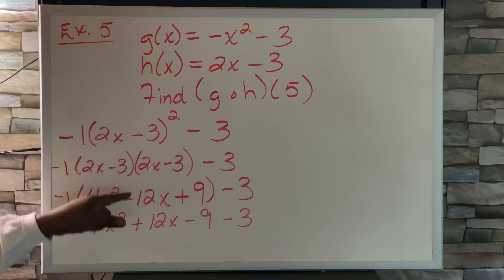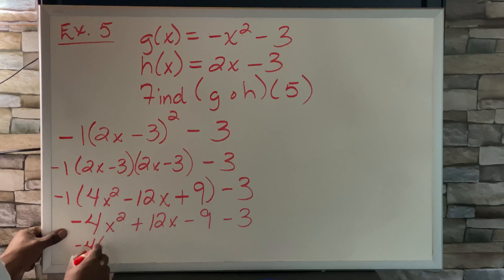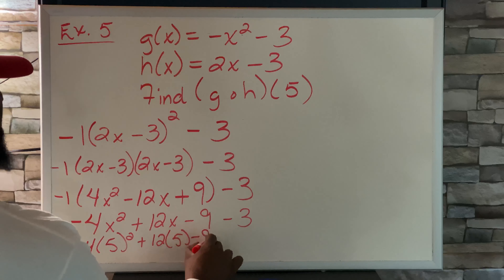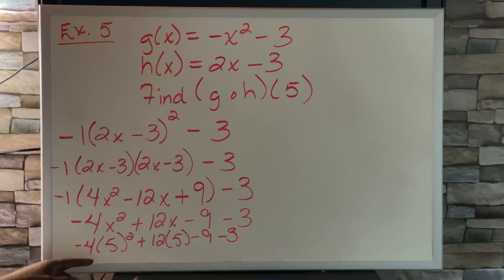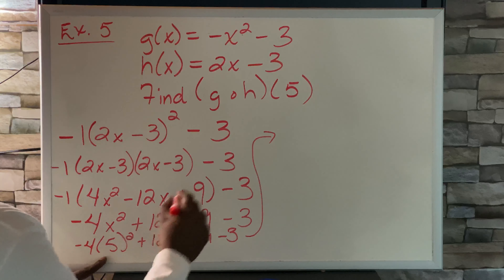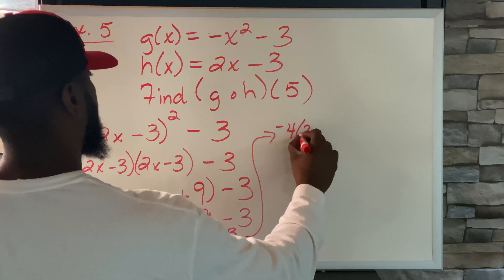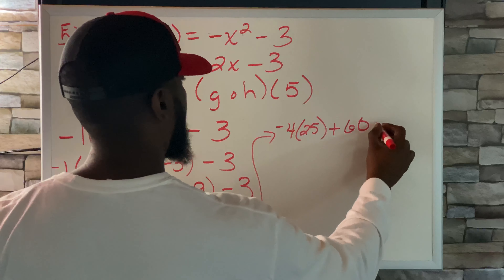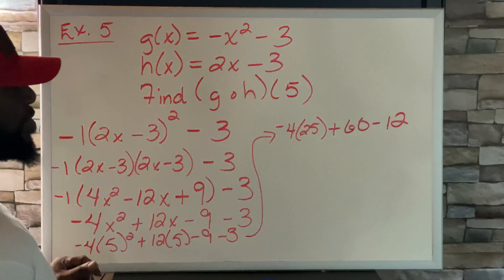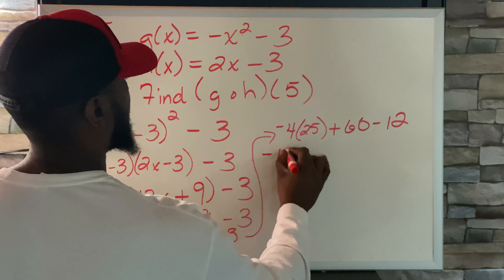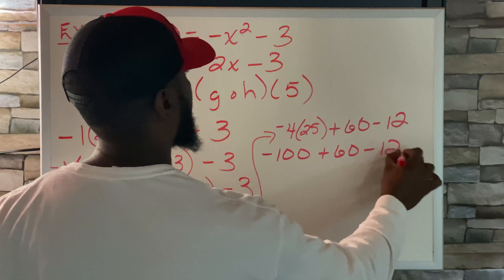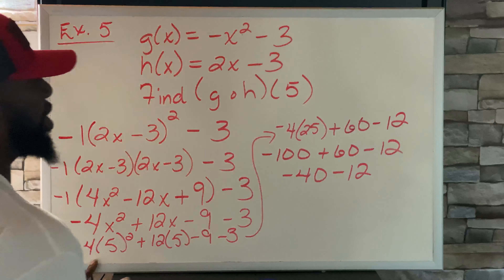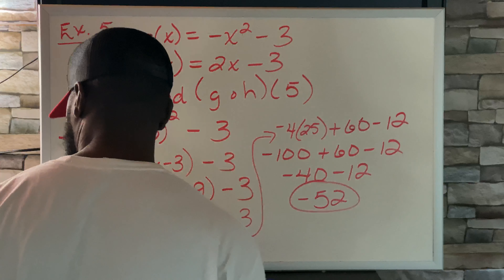Now we substitute 5 in. We have negative 4 times 5 squared plus 12 times 5 minus 9 minus 3. That's negative 4 times 25 plus 60 minus 12. Negative 4 times 25 is negative 100; negative 100 plus 60 is negative 40; negative 40 minus 12 is negative 52.